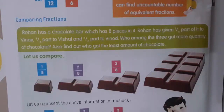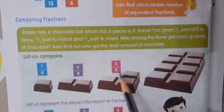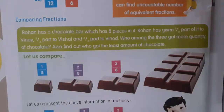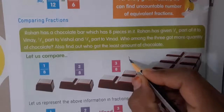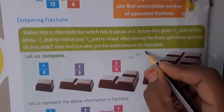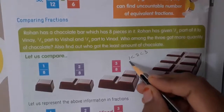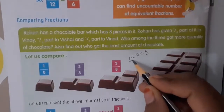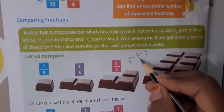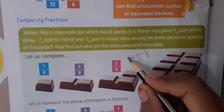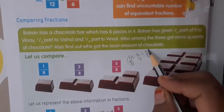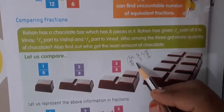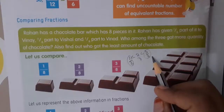Among these 3 fractions, to find the least and the highest one, compare their numerators because the denominators are the same. Comparing numerators: 1, 2, 3 — so 1 is less than 2 is less than 3. Here 1 is the least and 3 is the highest. So 1 by 8 is less than 2 by 8 is less than 3 by 8. Vinay got the least amount of chocolate.